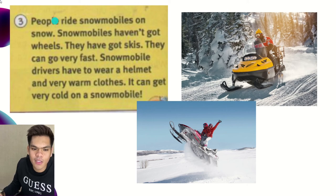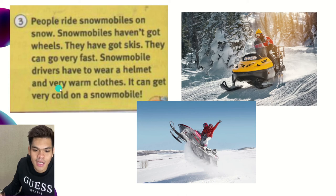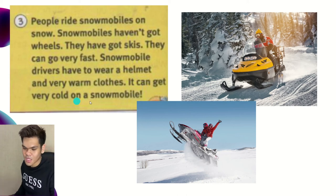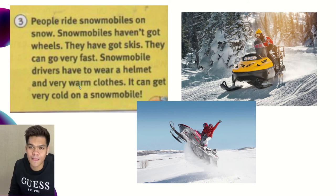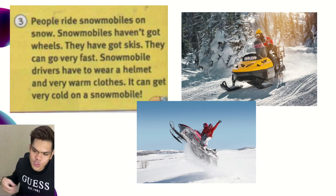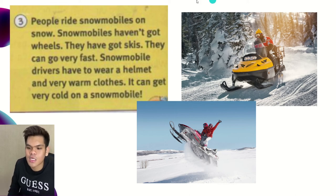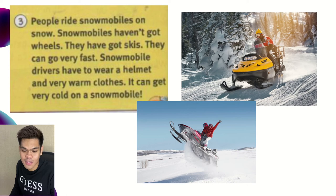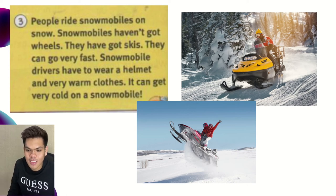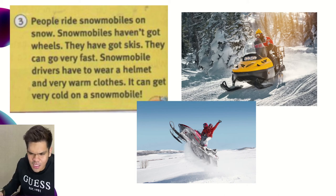'People ride snowmobiles on snow. Snowmobiles haven't got wheels — they have got skis. They can go very fast. Snowmobile drivers have to wear a helmet and very warm clothes. It can get very cold on a snowmobile.' I think this is quite unfamiliar for us because we do not have snow here. This transport is called a snowmobile, and it is apparently very popular in countries that have snow. They use it as a means of transport, and as you can see in the picture, it can go very fast.